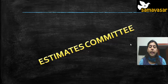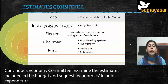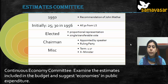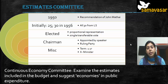Now we look at the Estimates Committee. The first Estimates Committee was formed in 1950 on the recommendation of John Mathai, who was then the finance minister. Initially it had 25 members, which was increased to 30 in 1956. All 30 members are from Lok Sabha — this is an important distinction. Members are elected by proportional representation through a single transferable vote.